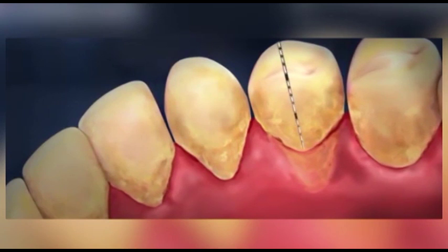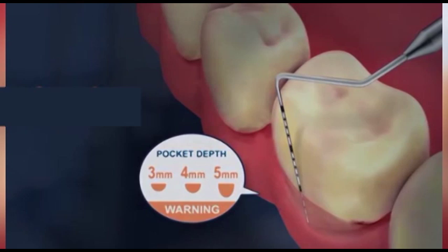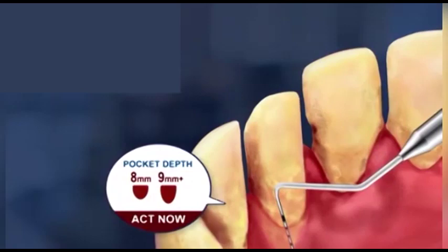In advanced periodontitis, supporting fibers and bones are destroyed. Teeth become loose and may need to be removed by a dentist. It comes with a pocket depth of 8 to 9 millimeters or more.